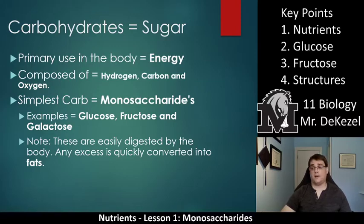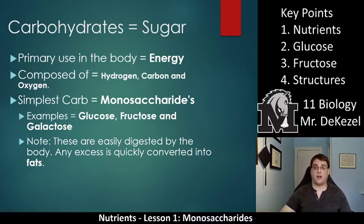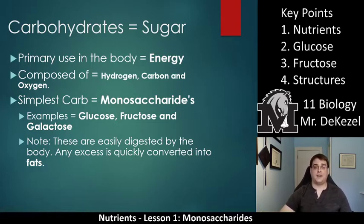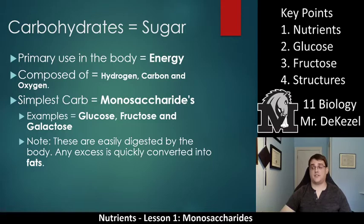Carbohydrates are the same as sugars — if you're eating a spoonful of sugar, you're eating a spoonful of carbs. The primary use for carbohydrates in our body is energy. If you drink an energy drink it's full of sugar and you get an energy boost — eventually you crash, but you get a boost at the time. Carbohydrates are composed of three elements: hydrogen, carbon, and oxygen, though sometimes others are involved. The simplest type of carbohydrate is known as a monosaccharide, and that is the title of our lesson.